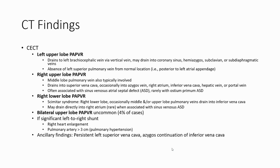Right lower lobe PAPVR, also known as Scimitar syndrome: right lower lobe pulmonary vein drains into inferior vena cava, may drain directly into right atrium, associated with sinus venosus-type defect. With significant left-to-right shunt, findings include right heart enlargement, large pulmonary artery more than 3 cm in diameter, and prominent azygos vein versus left superior vena cava.